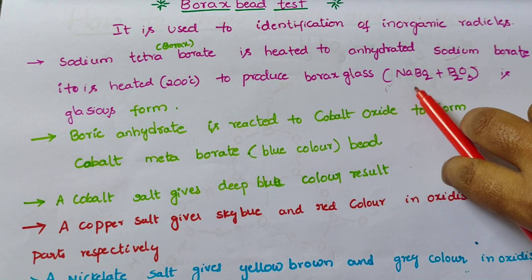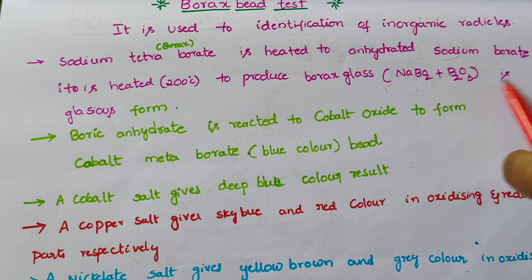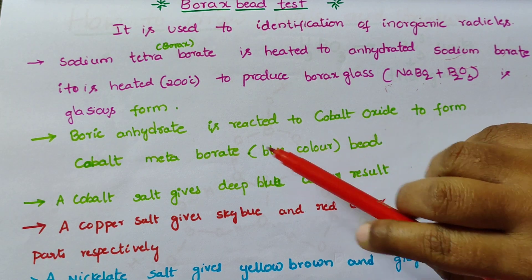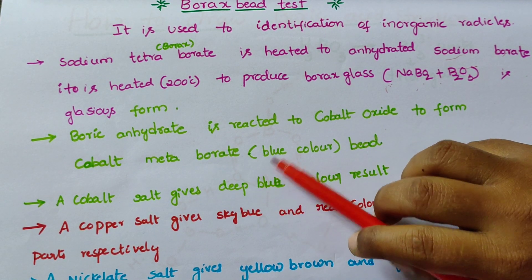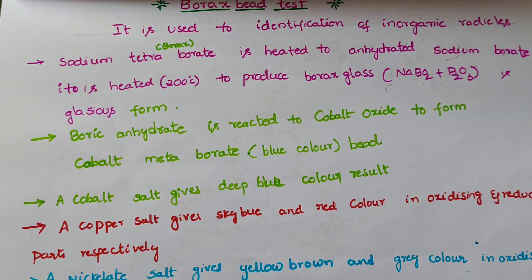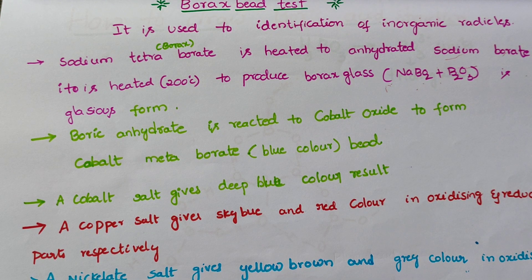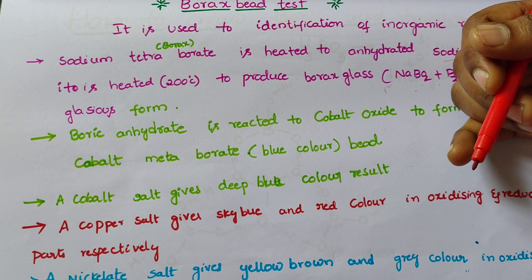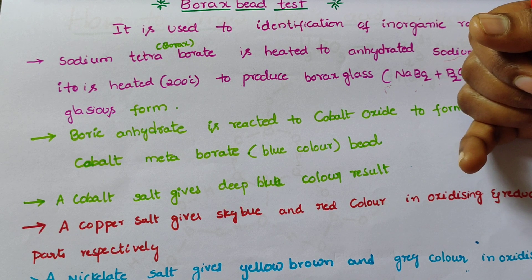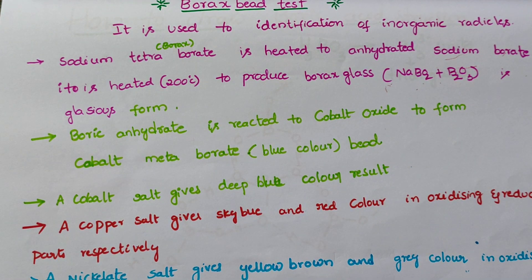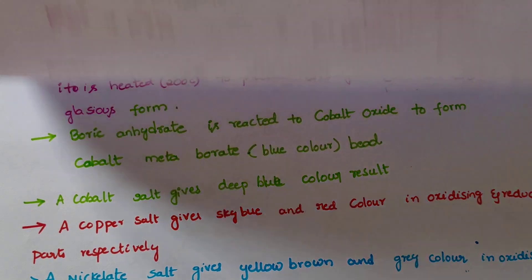Borax glass is a mixture of NaBO2 and B2O3 in glassy form. The boric anhydride reacts with cobalt oxide to form cobalt metaborate, giving a blue color bead observed in the Bunsen burner flame. A copper salt gives sky blue and red color in oxidizing and reducing parts respectively. A nickel salt gives yellow, brown, and gray color. Only aluminum does not give a borax bead.